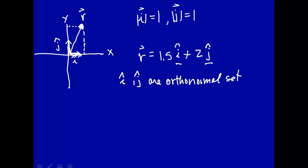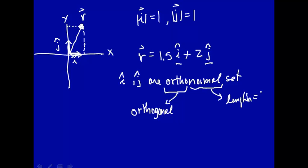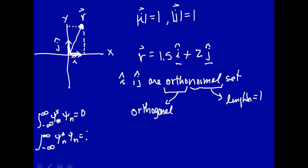Any vector can be represented as a linear combination of these two vectors. So 'ortho' — what does that mean? Ortho means orthogonal. And what does 'normal' mean? Normal means the length is equal to 1. Now in quantum mechanics, if you have something orthogonal, you integrate from minus infinity to plus infinity of one eigenfunction times another eigenfunction, and that is equal to 0. And if you integrate the same eigenfunction with itself, that's equal to 1. This is called an inner product.